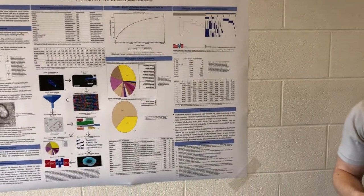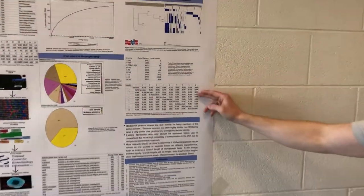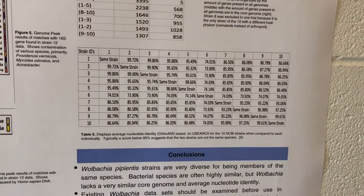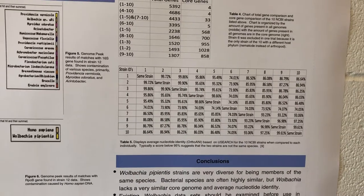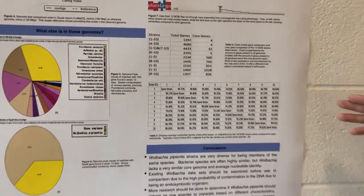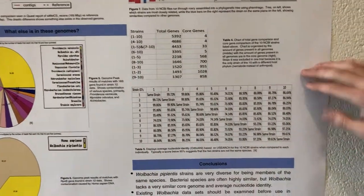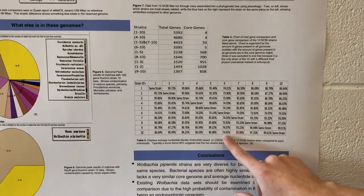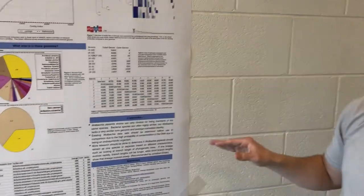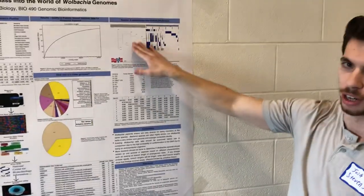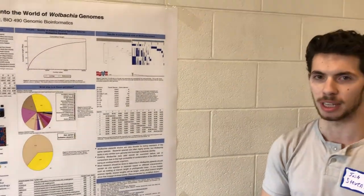To determine if these qualify as distinct species by standard measures, we looked at an ANI calculator. The threshold to be considered the same species is typically 95% average nucleotide identity. Most of these strains were under that threshold. Strains up to strain 4 were all similar, and strains 10 through 7 were all similar, but strain 6 was different. Strain 6 was from a nematode host, while the others were all from arthropod hosts. It's notable that the nematode strain was in the middle of the phylogenetic tree, yet it is the least similar of the bunch, and this is one way these could be classified as different species.